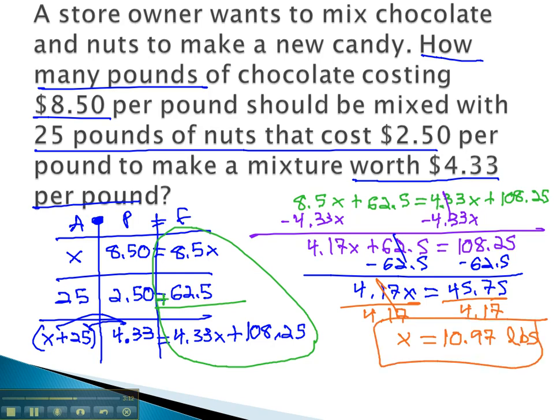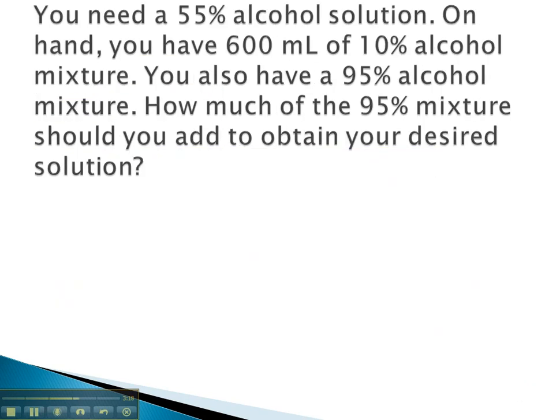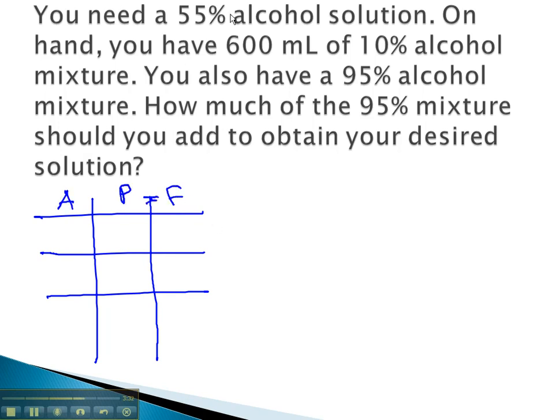Let's try another example where we have to organize our information and solve the equation. In this problem, we need a 55% alcohol solution. Be careful here. Even though that comes first, what we need, that is going to be our final solution at the end. We need 55%, 0.55, at the end.